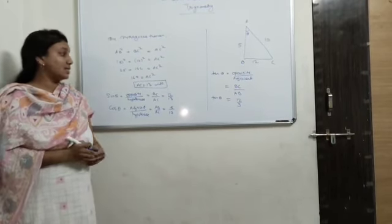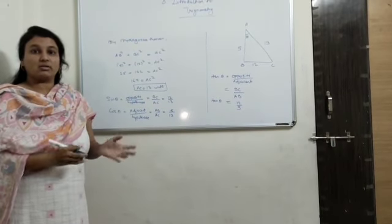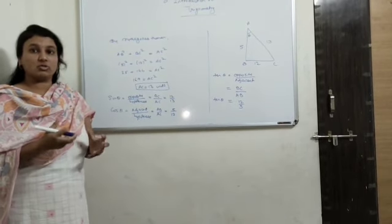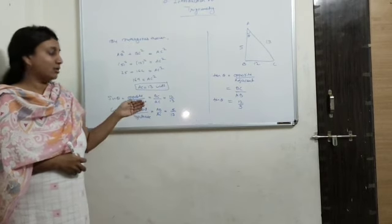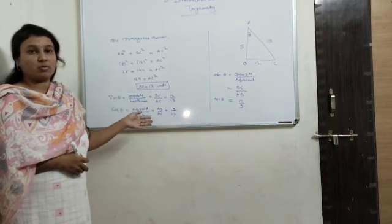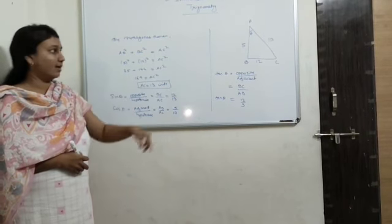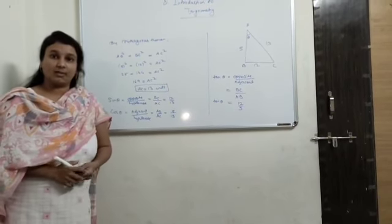So, today we have just gone through the basic concept of trigonometry. How trigonometry is dependent upon the ratios of sides and angles, that concept we have gone through. And here we have just seen the three formulas of sin theta, cos theta, and tan theta for the right angle triangle. Thank you very much.